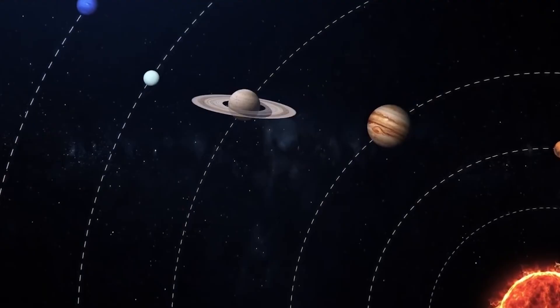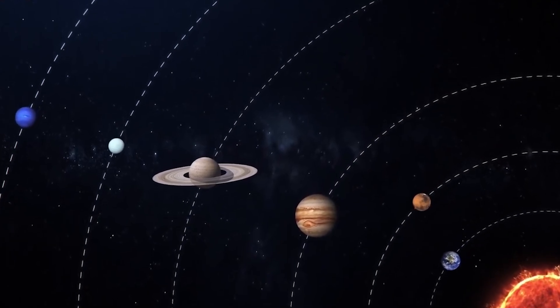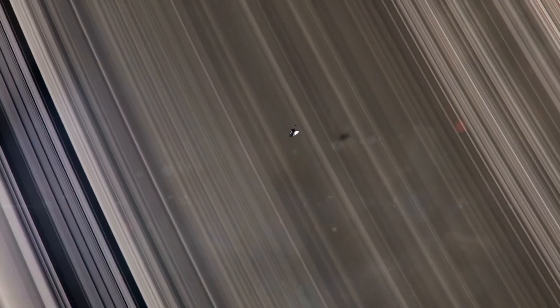NASA's New Horizons spacecraft is zooming out of the solar system at more than 31,000 miles an hour, and when it runs out of power in the 2030s, it'll fall silent more than a billion miles short of the heliosphere's outer edge.